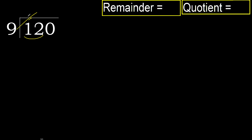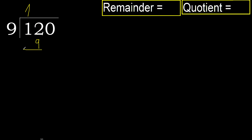9 multiplied by 2 is 18, which is greater. Multiply by 1: 9. 9 is not greater, so the quotient digit is 1. 12 minus 9 equals 3.